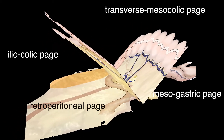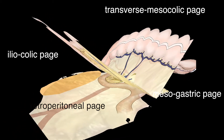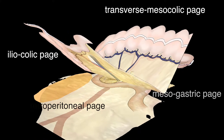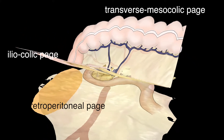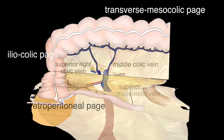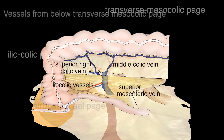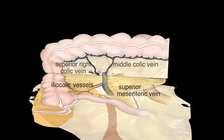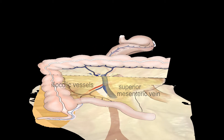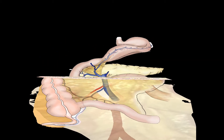With the distinction of these pages, the complex fascial and vascular situation can be illustrated. All pages are symbolically connected at the back of a small booklet, where the vascular structures that need to be recognized or dissected during right hemicolectomy merge.